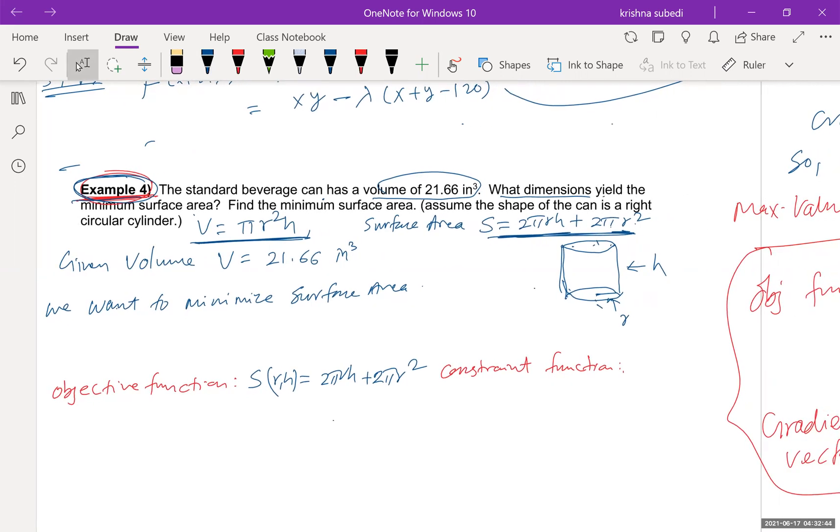And what is the condition? What is the constraint? The constraint is that the volume of the can must be 21.66. So the condition or constraint is volume V equals 21.66. That is the constraint.